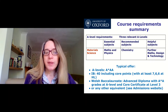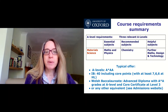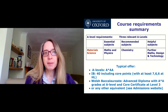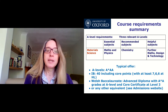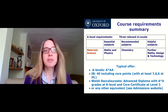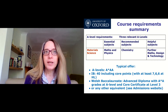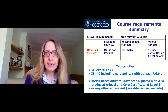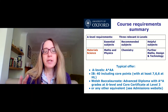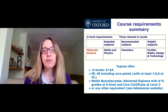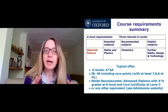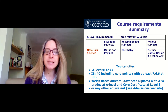If you are able to do a fourth A-level alongside those three, then we would consider further maths and design technology helpful subjects for studying Materials Science at Oxford. But do be careful — our typical offer is A*AA, and that's three A-levels. Do not take on four A-levels to the detriment of achieving those high grades.